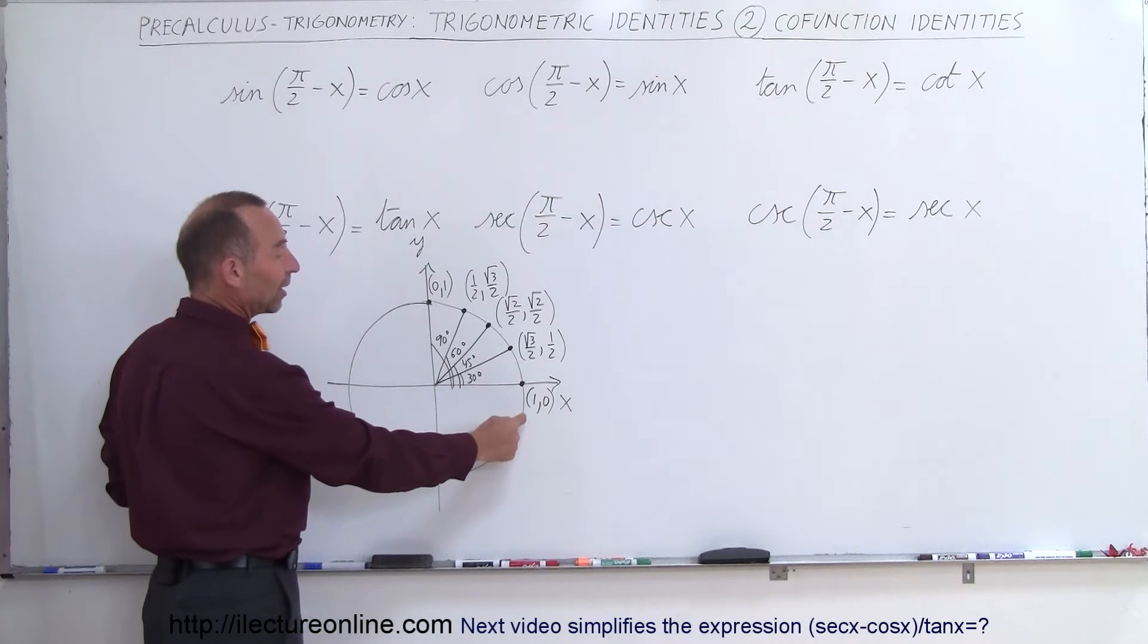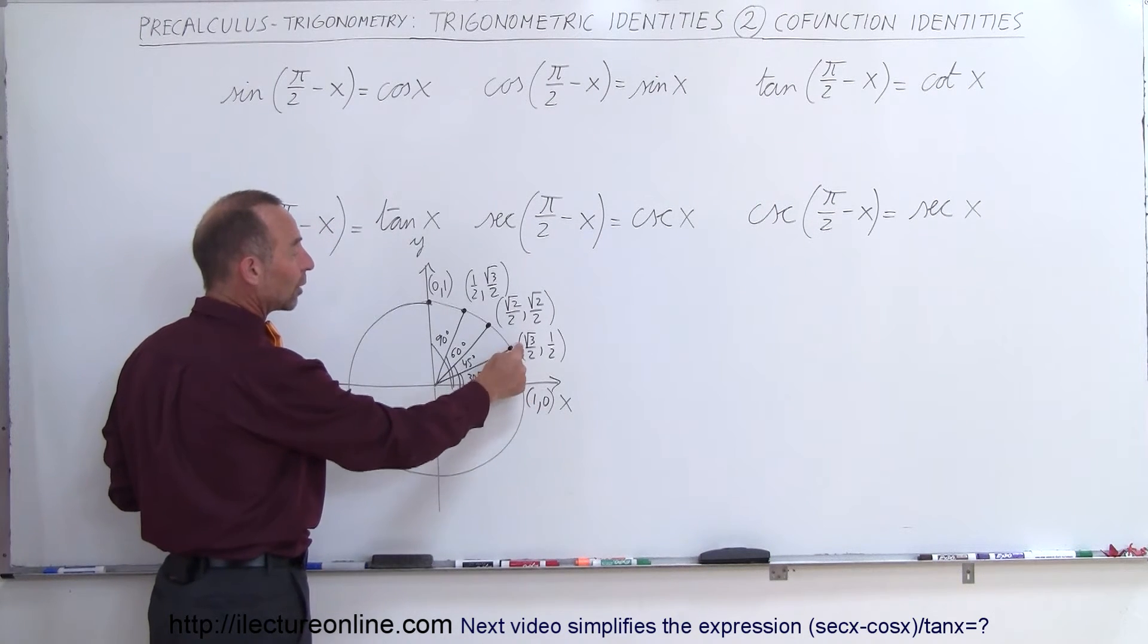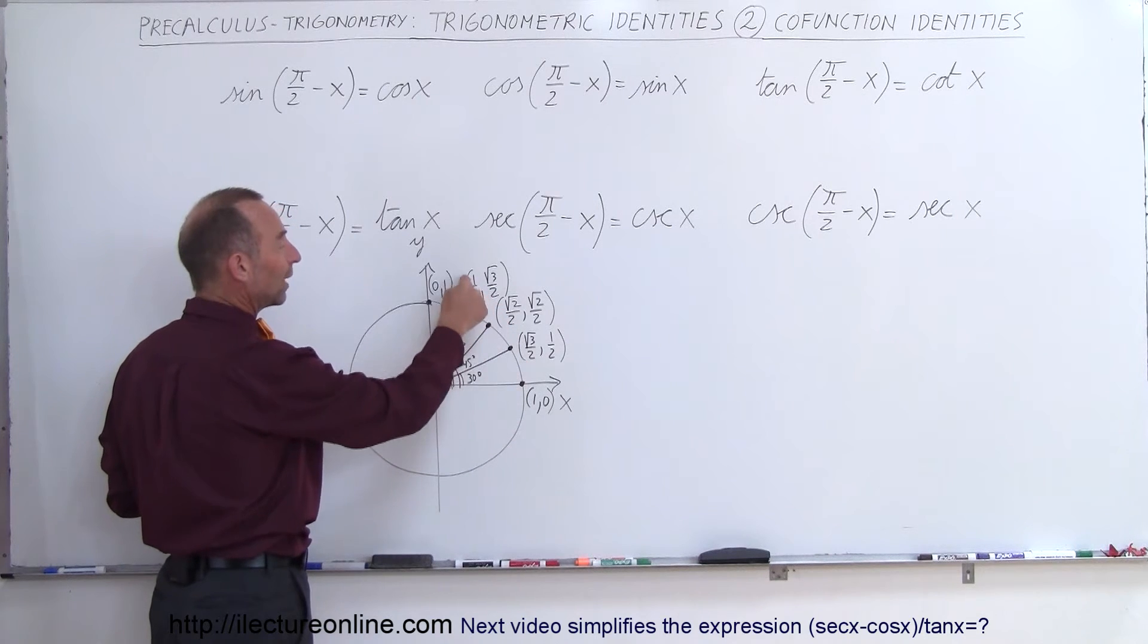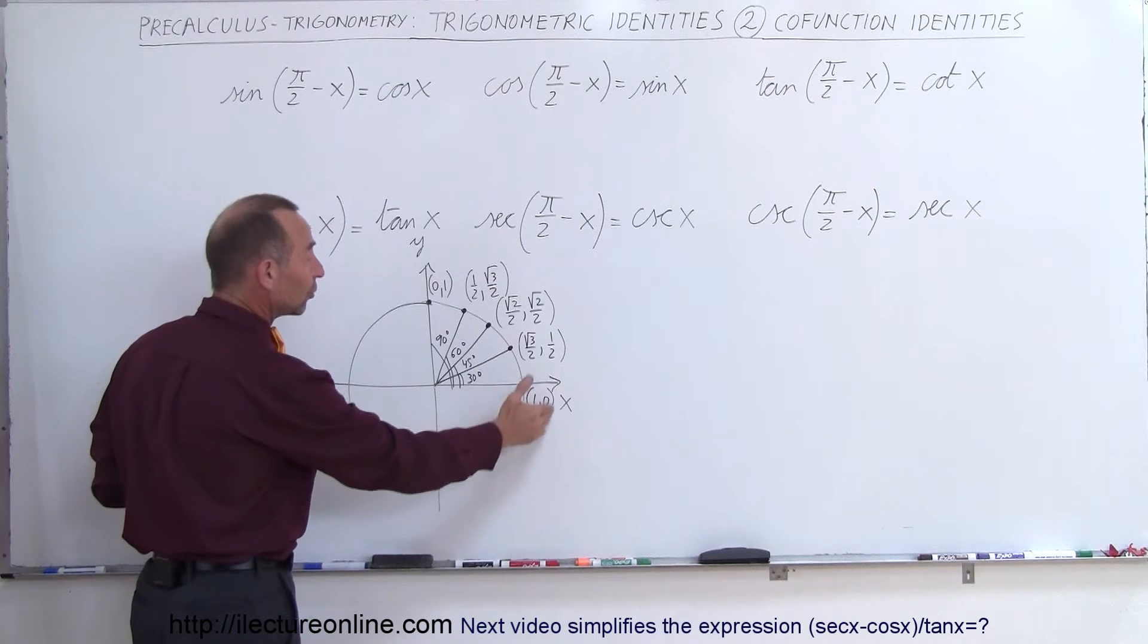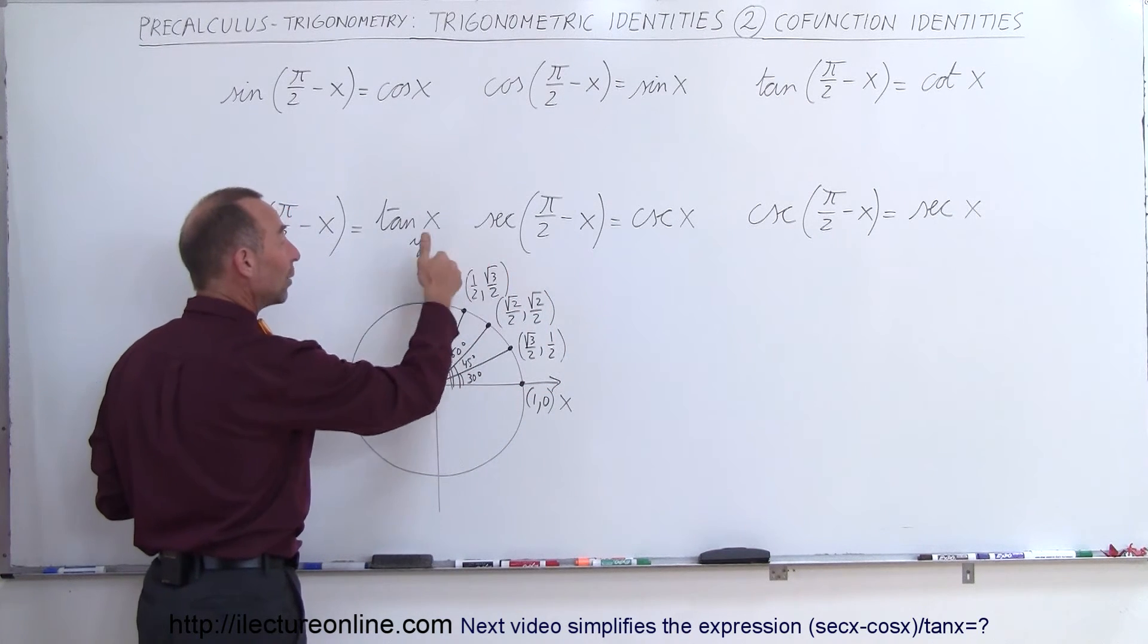And notice that the value for the cosine of the angle goes from 1 to the square root of 3 over 2, to the square root of 2 over 2, to 1 half to 0. And the sine of that angle goes from 0 to 1 half to the square root of 2 over 2, square root of 3 over 2, and 1.